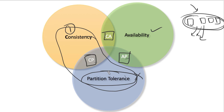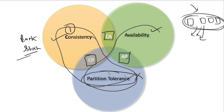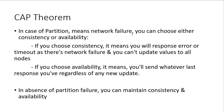The important cases are CP and AP. CP means in case of network failure, for critical systems like banks or stock trading, you choose consistency. AP means for non-critical operations like YouTube likes, even with a delay it doesn't matter — you choose availability. In case of partition, if you choose consistency, you respond with an error or timeout. If you choose availability, you send whatever last response you have regardless of any new update. In the absence of partition failure, you can maintain both consistency and availability with a time delay.